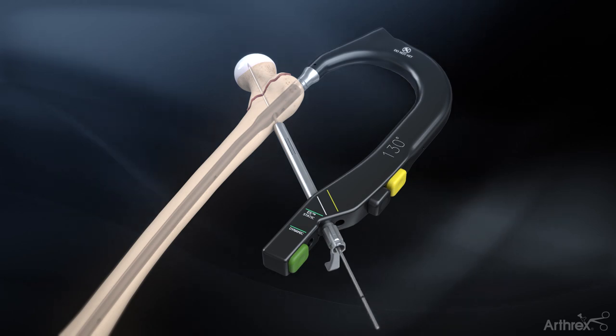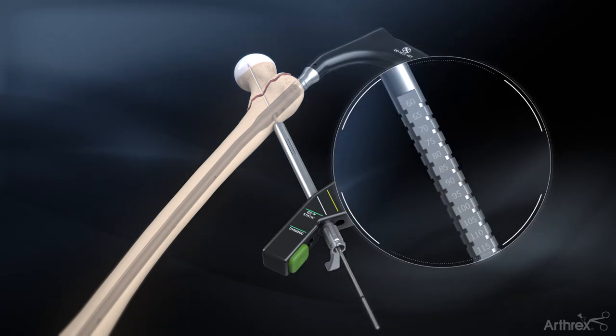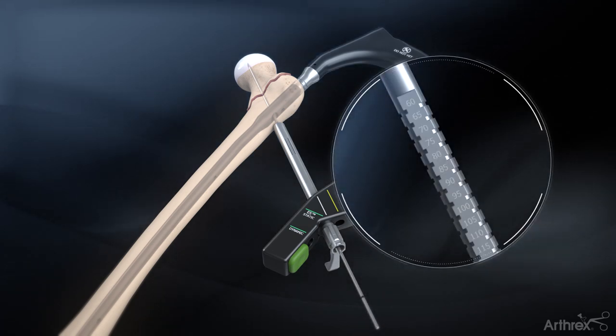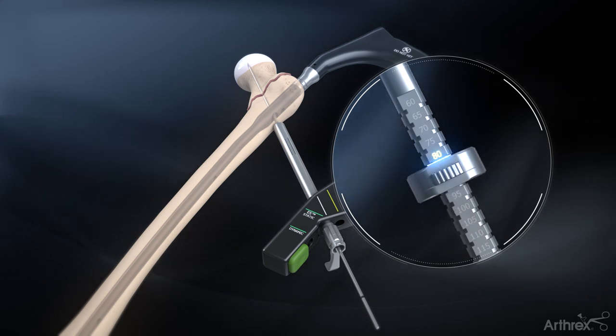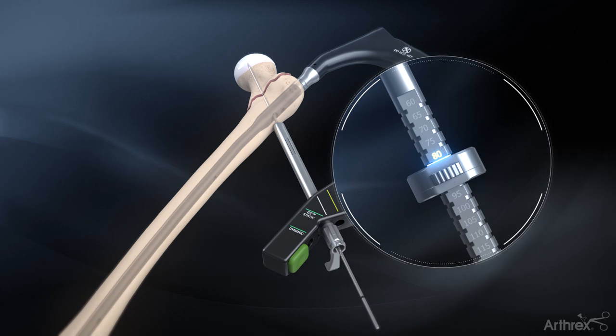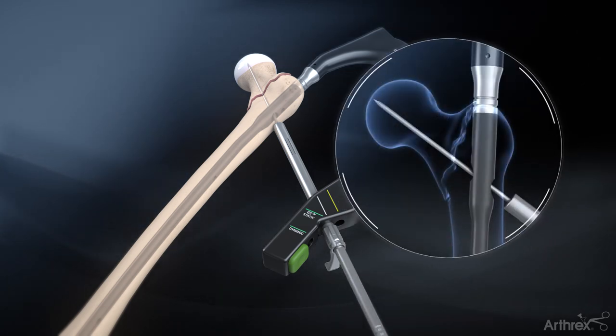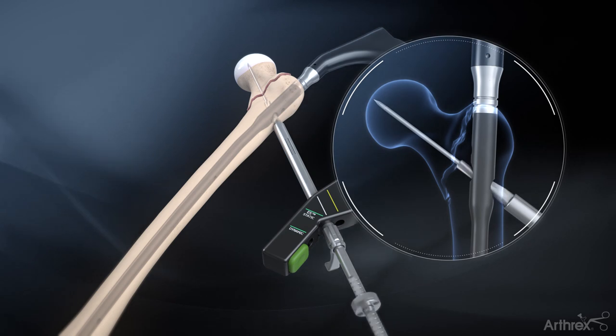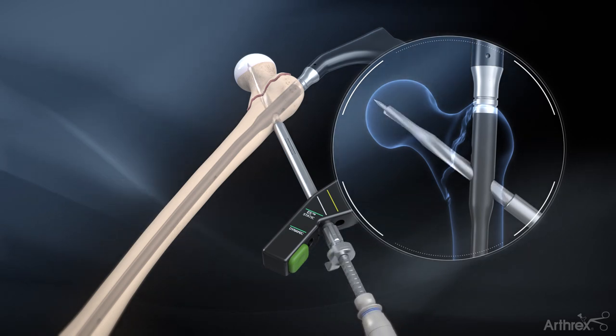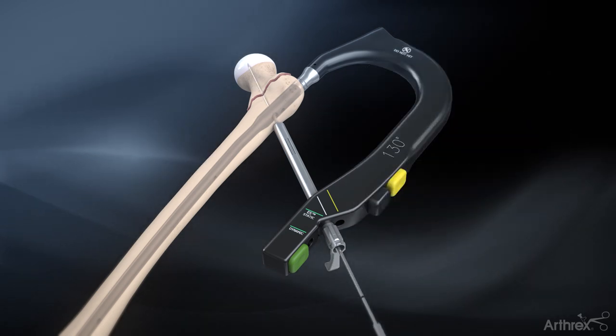Remove the 3.2 mm pin guide. Set the adjustable stop on the 10.3 mm cannulated lag screw drill at at least 5 to 10 mm less than the measurement, so the tip of the drill does not pass beyond the guide pin. Insert the 10.3 mm cannulated lag screw drill over the guide pin and drill into the femoral head until the depth stop contacts the sleeve.